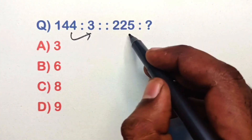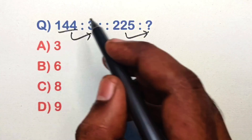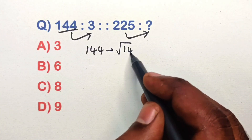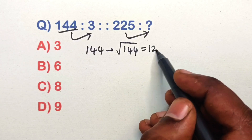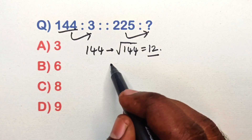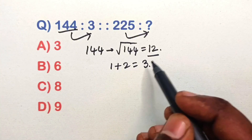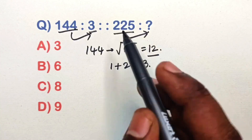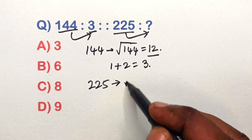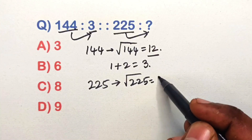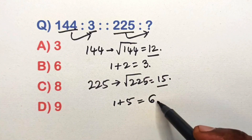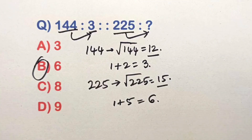Find the relation in this analogy equation. Take 144: the square root of 144 is 12 — add digits: 1 plus 2 is 3. Same way, take 225: square root of 225 is 15 — add digits: 1 plus 5 is 6. So option D is the correct answer.